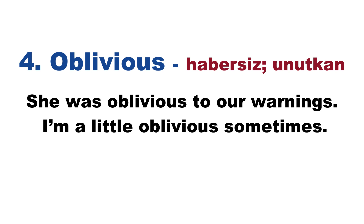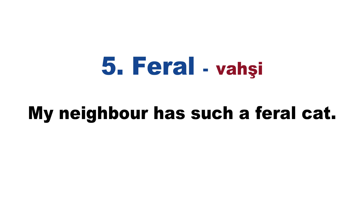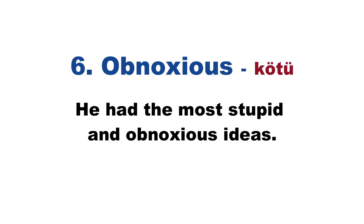Word number five is 'feral.' Feral means wild or savage. For example: my neighbor has such a feral cat — a feral, wild cat. Word number six is 'obnoxious.' Obnoxious means disgusting, ugly, or bad. For example: he had the most obnoxious ideas.